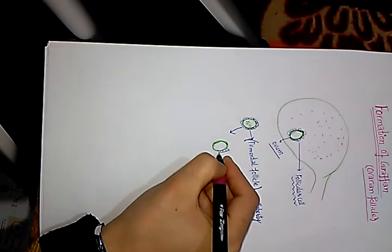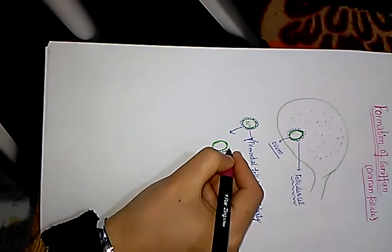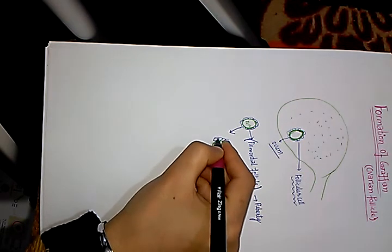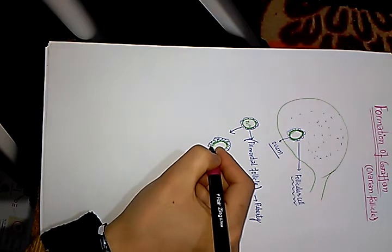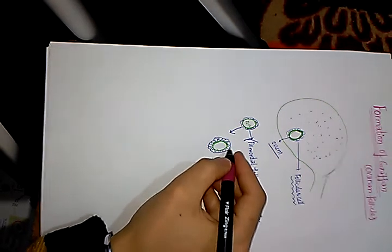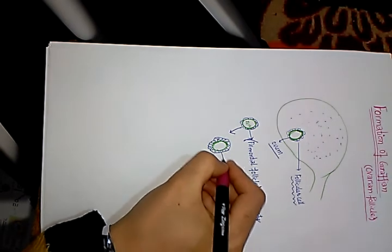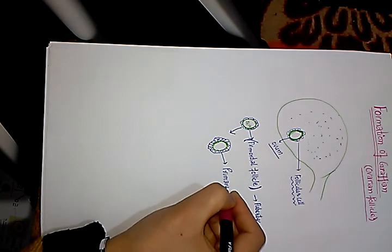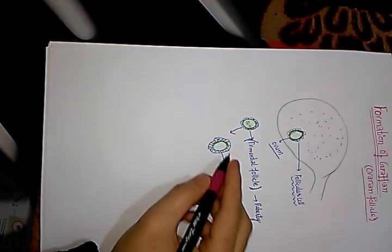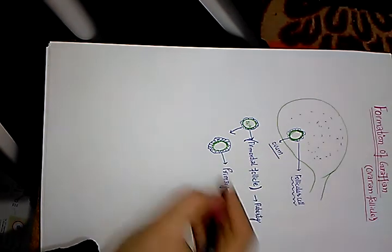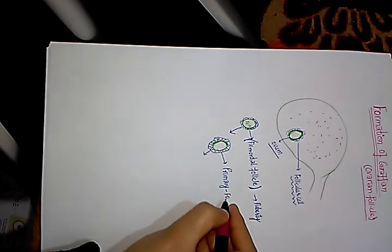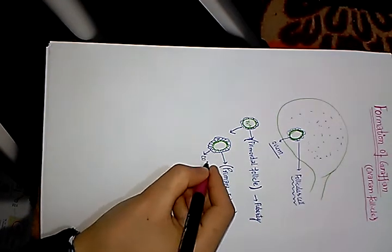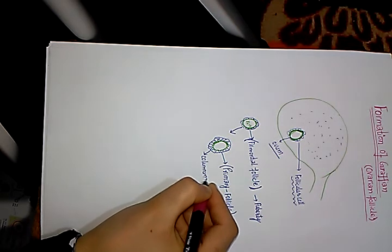If these follicular cells were flat and now they become columnar, it means development has progressed beyond the primordial follicle stage. These cells are no longer flat — they have become columnar. Together with these columnar cells, the oocyte is now called the primary follicle. So the primary follicle is nothing but the oocyte surrounded by columnar cells.